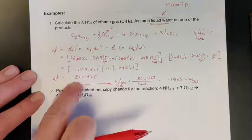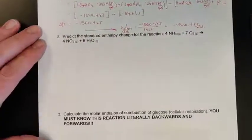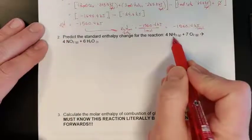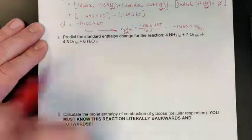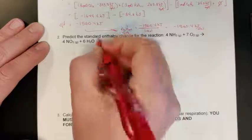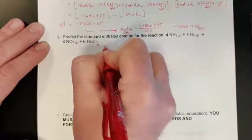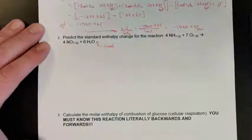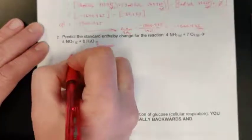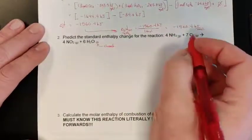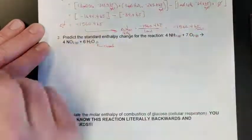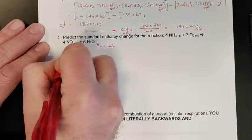Of course we can apply those to any other things. Here we have one where it says predict the standard enthalpy change for the reaction in which we have four moles of ammonia being burned in the presence of seven moles of oxygen to give us nitrogen dioxide and water in its liquid form. So again there's the information that this is a closed system. For this one then I'm just going to rewrite this so I can see it a little bit. There's my reactants, there's my products.